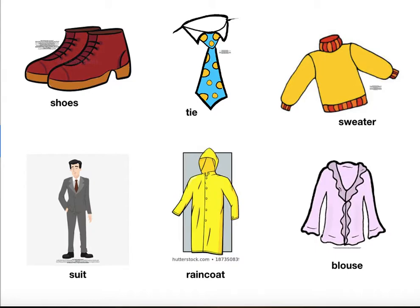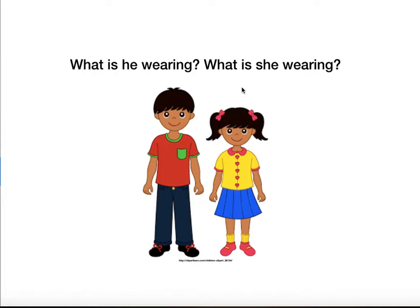Very good. One more thing — a suit is the jacket and the pants together. Do you know the word 'wearing'? Wearing means you have clothes on. I am wearing a shirt and pants.